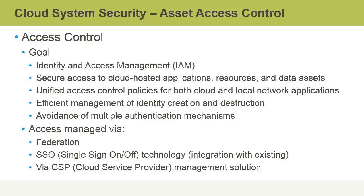We can build unified access control policies for both cloud as well as local network applications that we still might be running on-premises. This ensures efficient management of identity creation and destruction, such as the creation of user accounts and the removal of them when no longer required. Another goal of access control is to avoid the use of multiple authentication mechanisms, specifically multiple identity stores. We don't want a directory service with user credentials on-premises as well as with each specific cloud application. Instead, we want a single unified identity provider that is easier to manage and scales well. After people are authenticated to that centralized identity provider, they would be authorized to use a wide array of services.